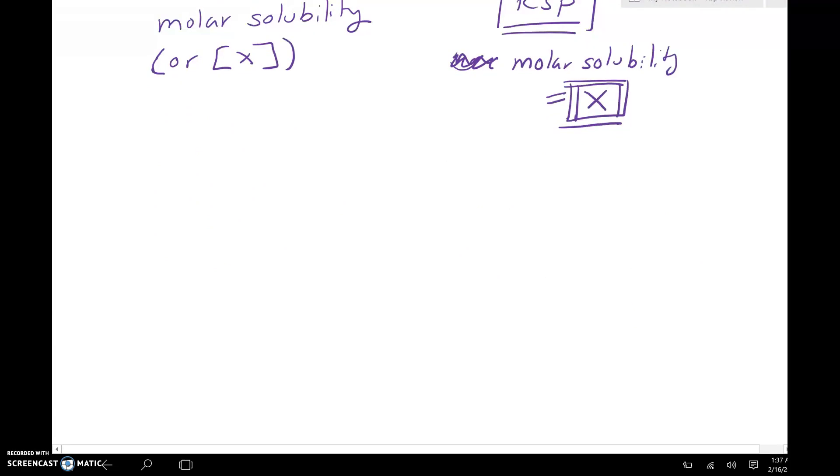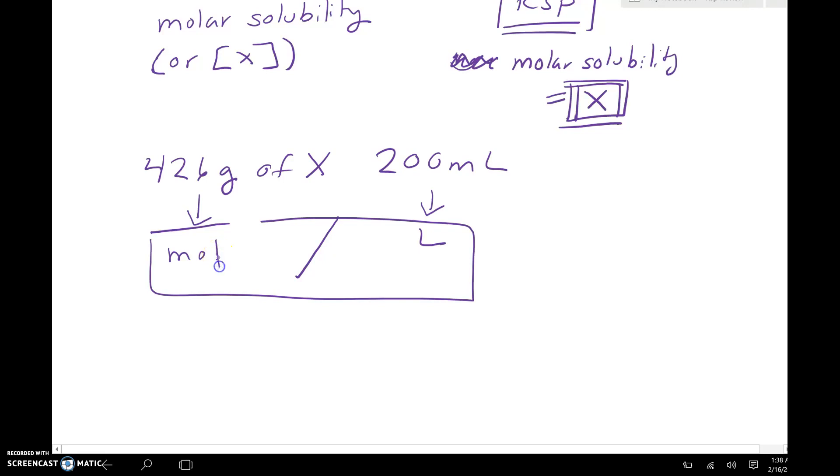The other thing that you need to remember is that very often they won't give molar solubility; they might give another version of solubility. For example, they might say like 4.26 grams of whatever substance dissolves in 200 milliliters, and so then you need to make sure that you take your grams to moles and then take your milliliters to liters and get a molar solubility by doing moles over liters. I think in two quizzes or maybe one problem one quiz we had that, but those are free points because we can all take grams into moles and then we can all take milliliters into liters to get our molar solubility. Just be aware that that is a conversion that we have to do very often in these problems.